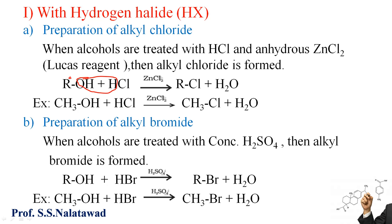The halogen atom Cl⁻ attacks on this carbocation, giving the corresponding alkyl chloride — RCl and H2O are formed. For example, methanol reacts with HCl in presence of anhydrous ZnCl2 to form methyl chloride and water. The mixture of ZnCl2 and HCl is called Lucas Reagent.